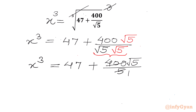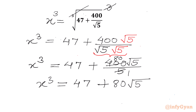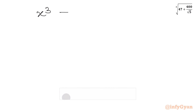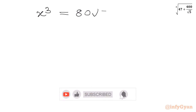The denominator simplifies to 1 and we write 80. So x cubed equals 47 plus 80 square root 5, or equivalently x cubed equals 80 square root 5 plus 47. Now I will factorize 80. Let me write x cubed equal to 80 square root 5 plus 47.